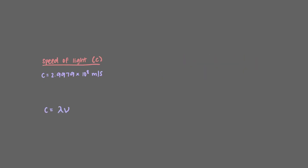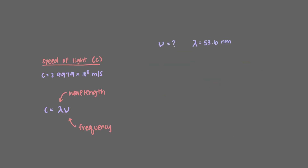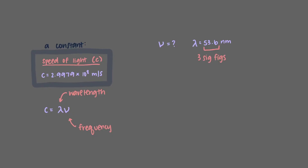The speed of light is equal to wavelength — denoted by the Greek letter lambda — times frequency, denoted by the Greek letter nu. If we want to determine the frequency of light with a wavelength of 53.6 nanometers, how many significant figures will our final result include? The speed of light is a constant, so we do not consider this value when determining significant figures. Since the only measured value is the wavelength, 53.6 nanometers, we only use this value — and because it has three significant figures, so should our result.